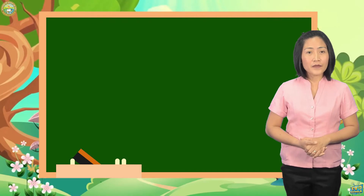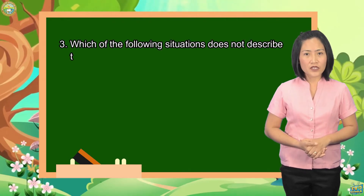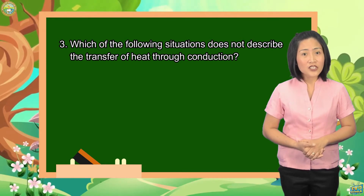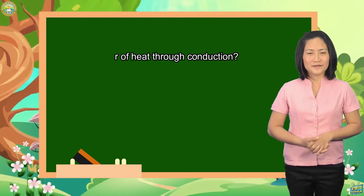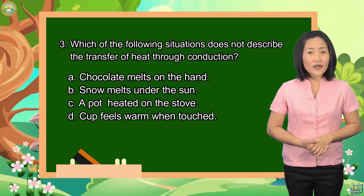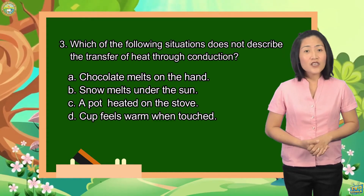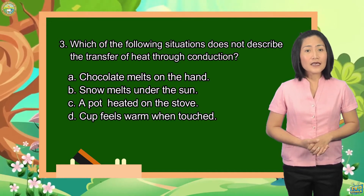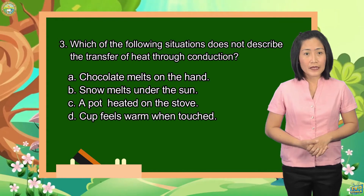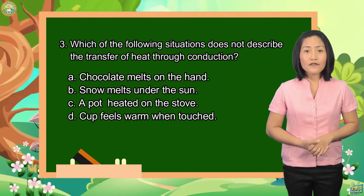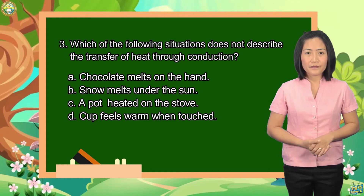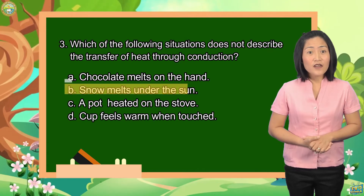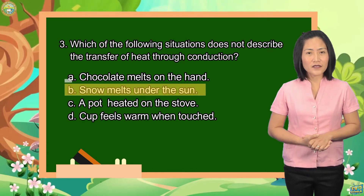Number 3. Which of the following situations does not describe the transfer of heat through conduction? A. Chocolate melts on the hand. B. Snow melts under the sun. C. A pot heated on the stove. D. Cup feels warm when touched. The correct answer is letter B, snow melts under the sun.